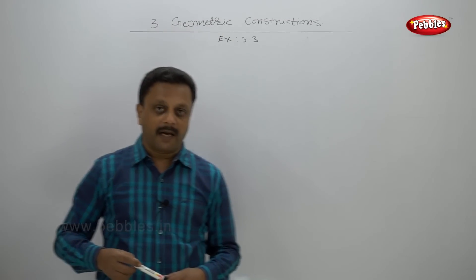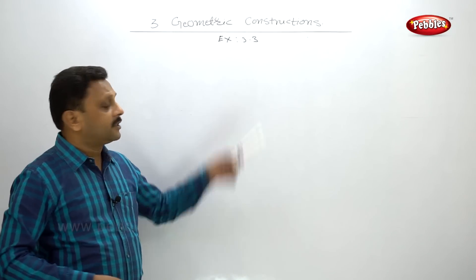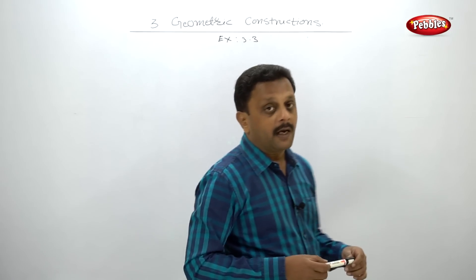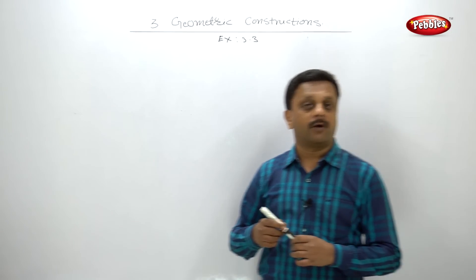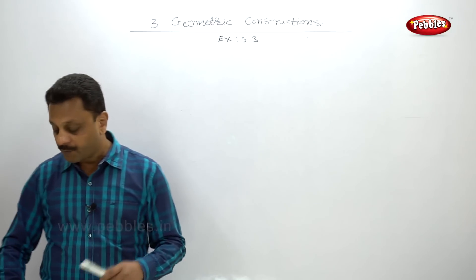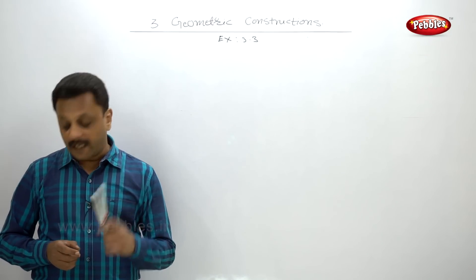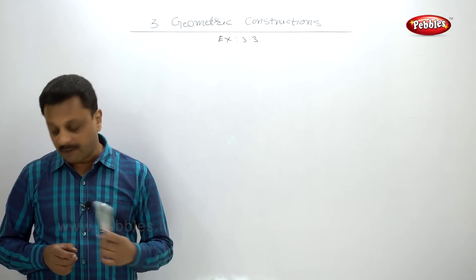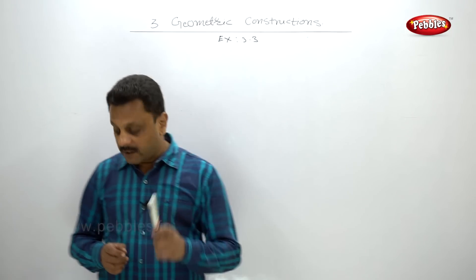Hello friends, welcome back. Let us see Exercise 3.3. As usual, I am going to discuss the problems and you are going to solve the problems — no spoon feeding please. Example one: Triangle ABC and DEF are similar. Construct ABC.